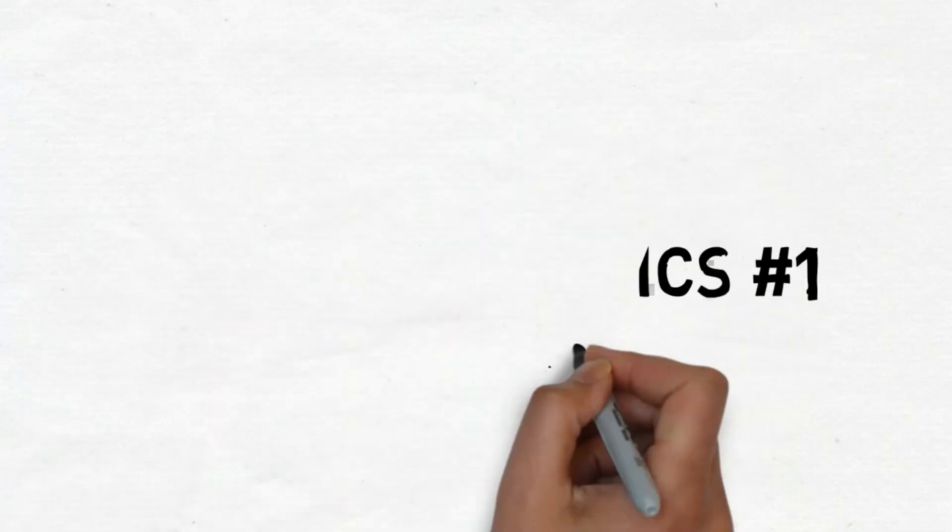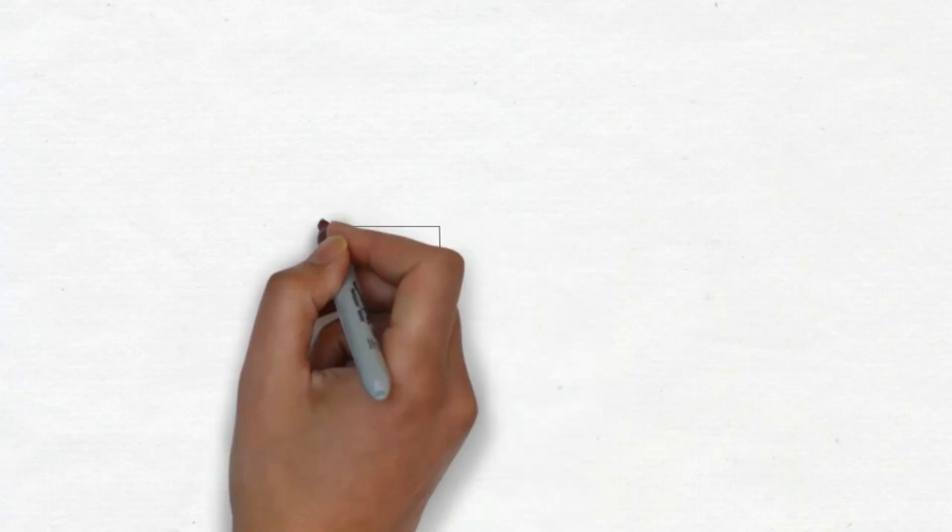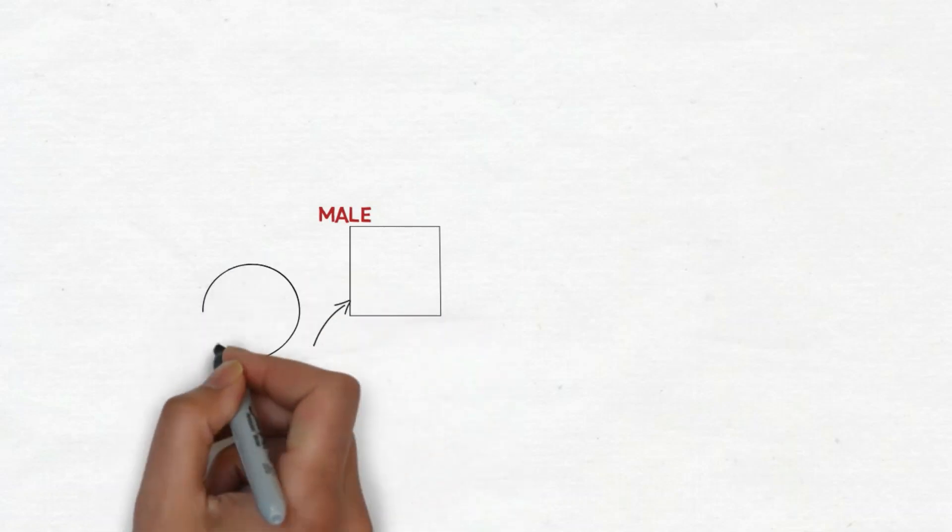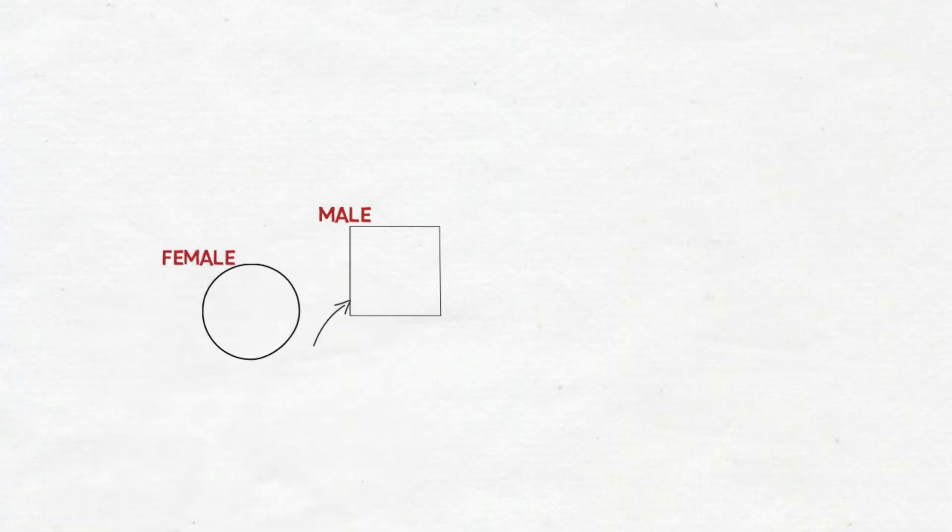To start off we're going to be drawing a square and the square represents any male. So if we draw a little arrow which leads to the square, this means that this is the person who is the patient or is giving us the information about the diagram. And a circle represents a female, in this case it's going to be his sister.